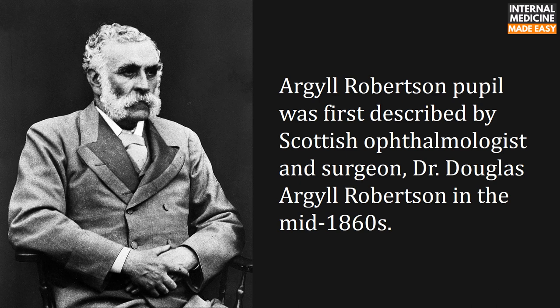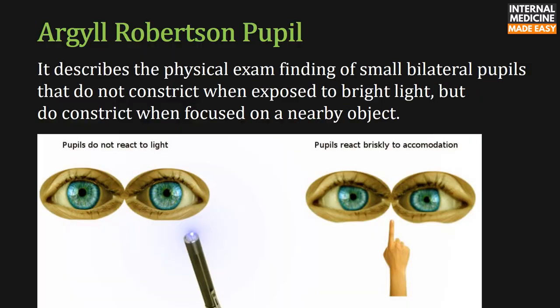Argyle Robertson pupil was first described by Scottish ophthalmologist and surgeon Dr. Douglas Argyle Robertson in the mid-1860s. It describes the physical exam finding of small bilateral pupils that do not constrict when exposed to bright light, but do constrict when focused on a nearby object.